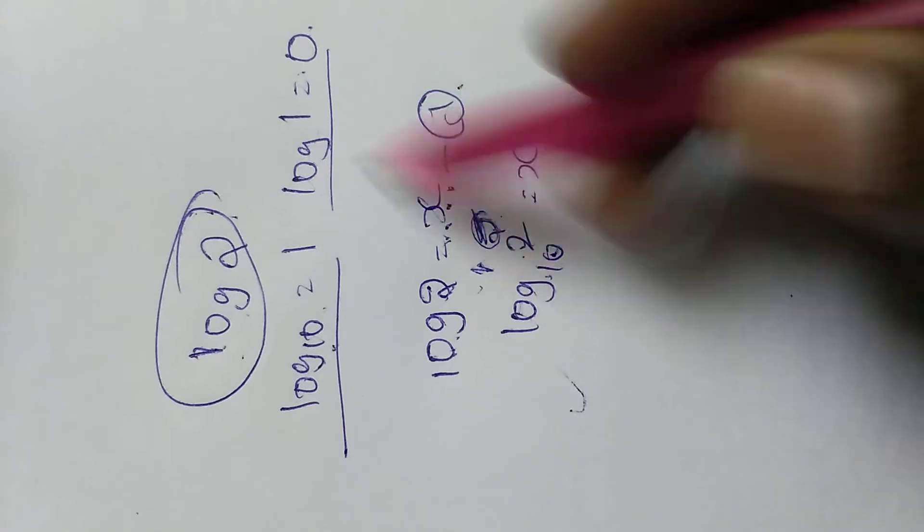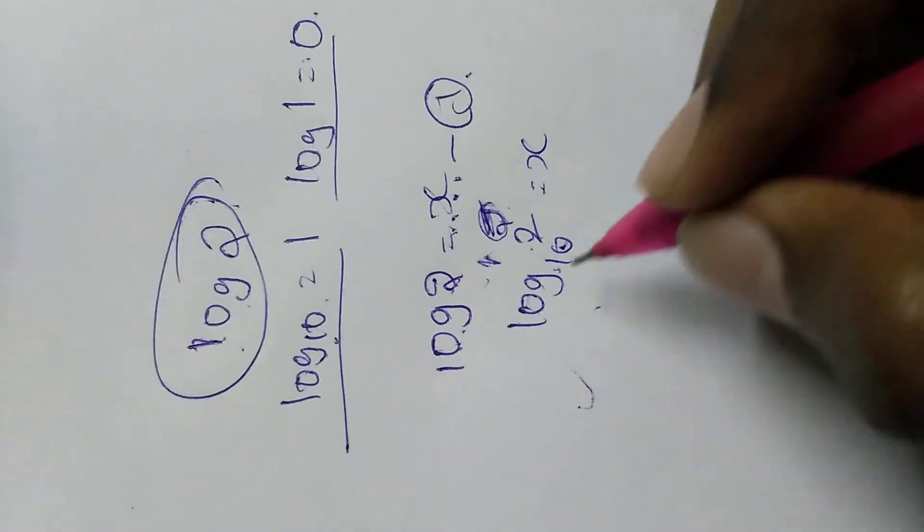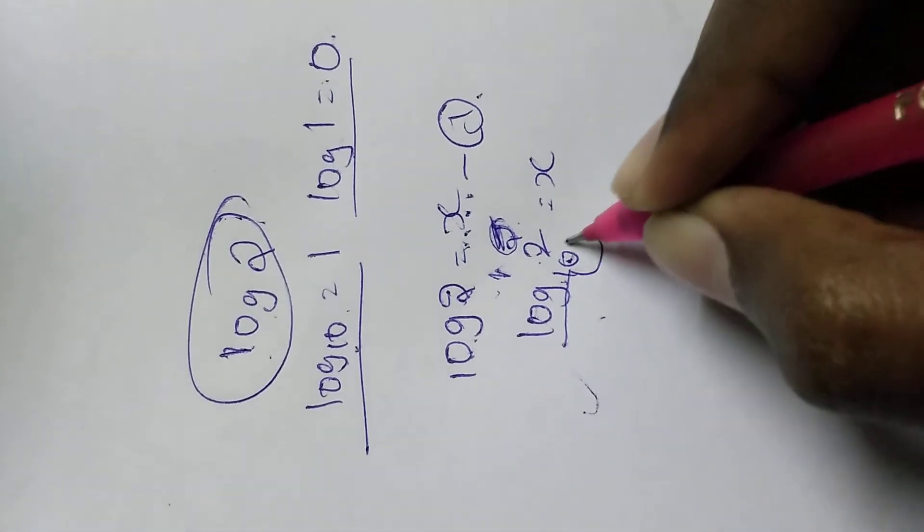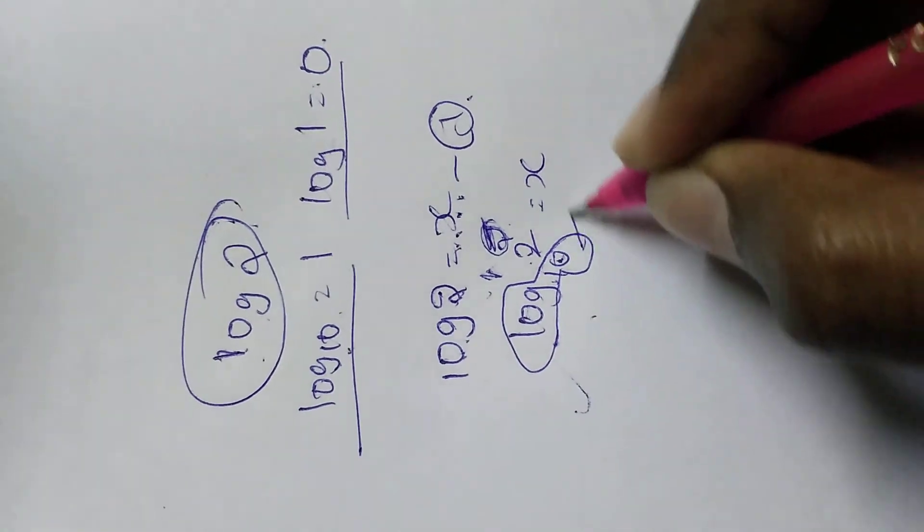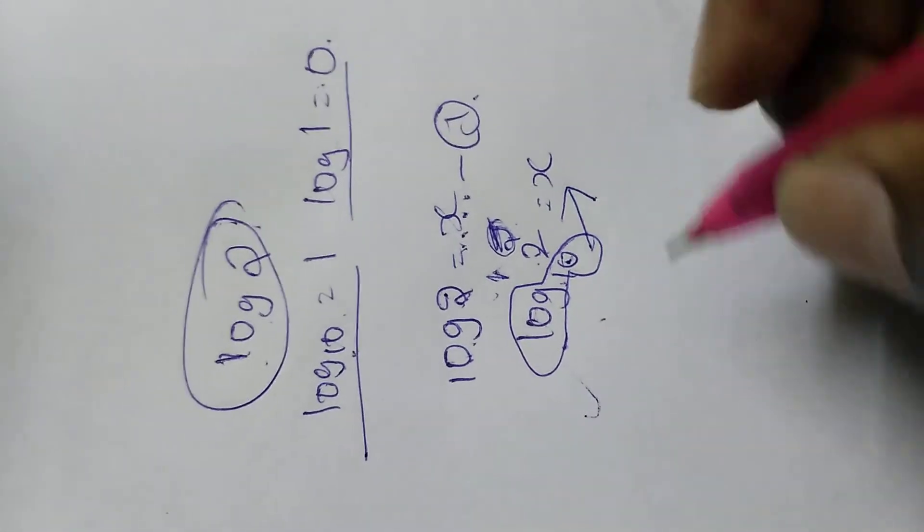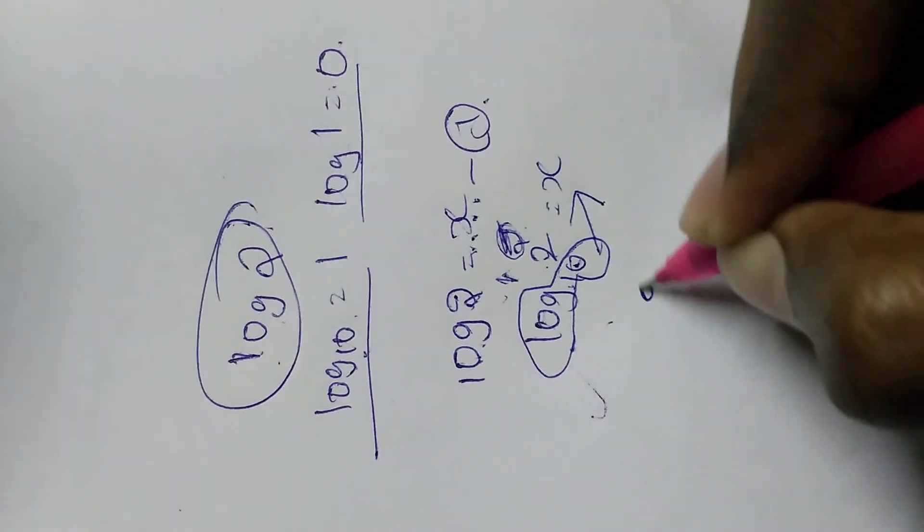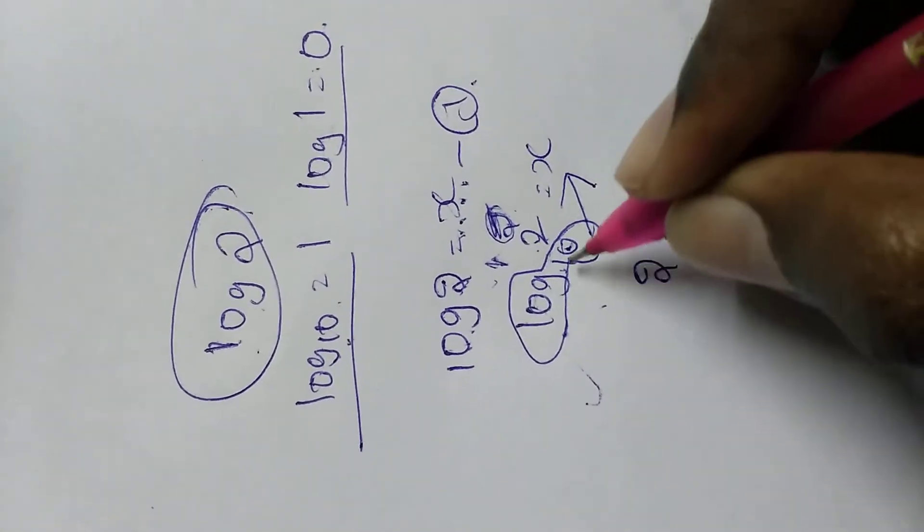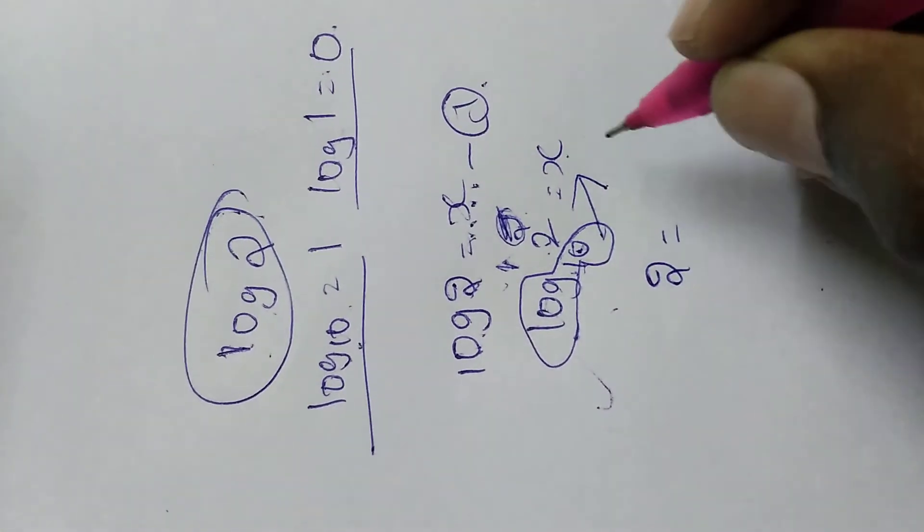If you learn these two formulas you will get this. Next, you have to make this log 10 move towards the right hand side, so 2 will remain in the left hand side, equals to log 10 when it moves to the right hand side.